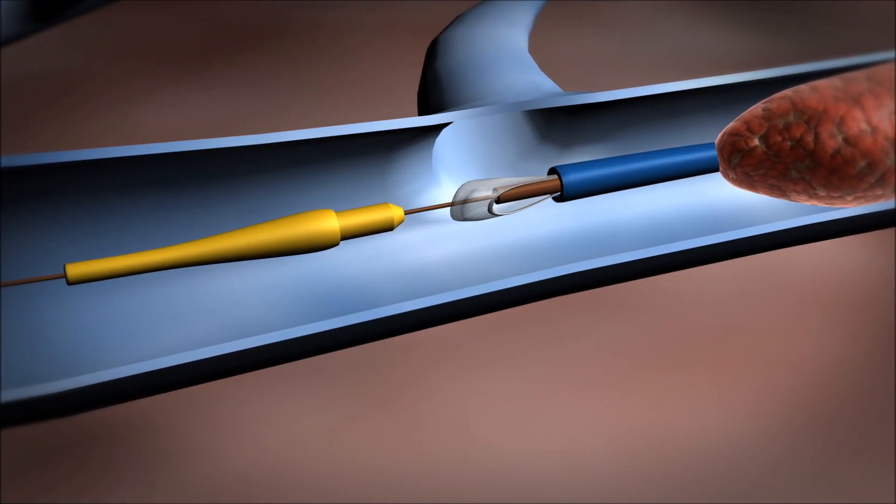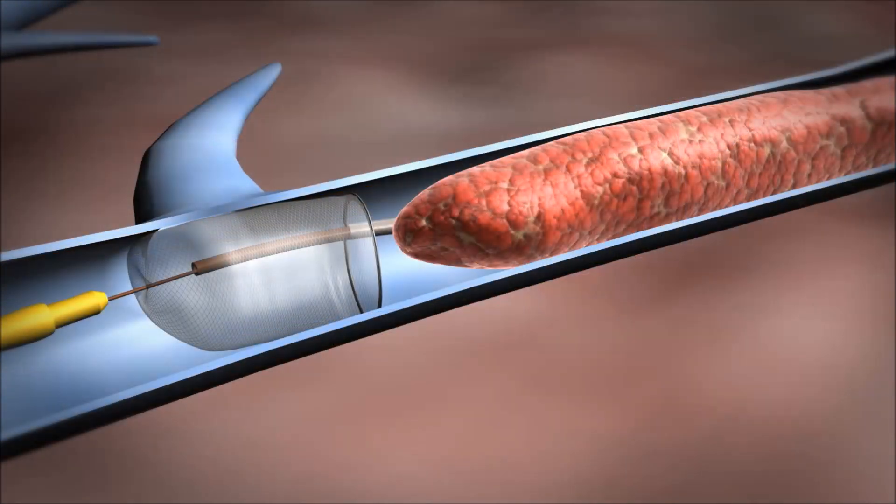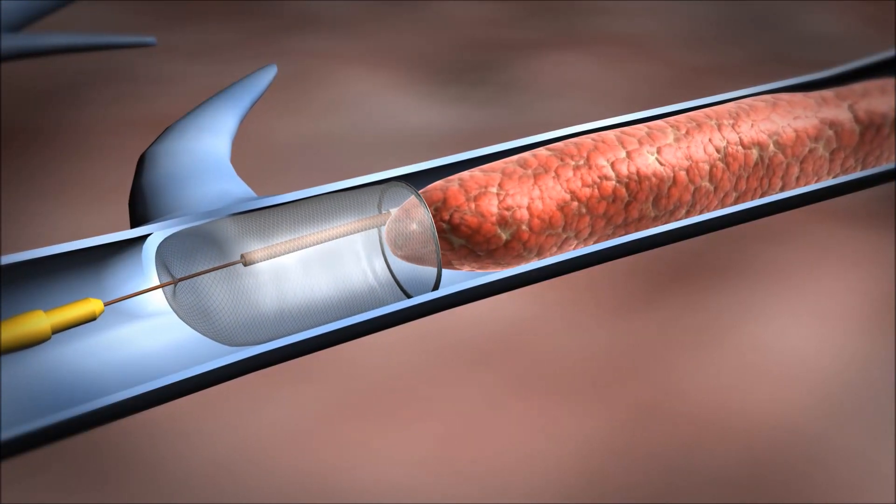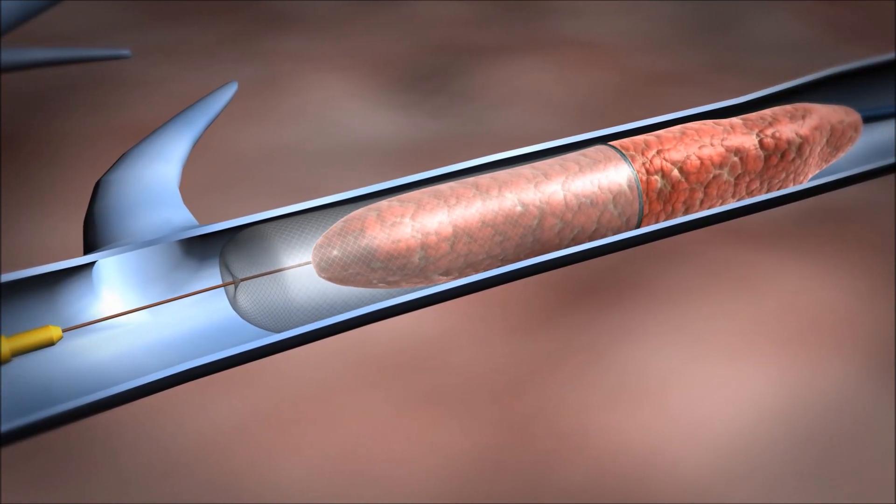Next, the outer sheath of the delivery catheter is retracted to deploy the proprietary Capere basket, which will capture the clot and provides distal embolic protection during the procedure.